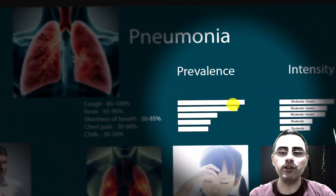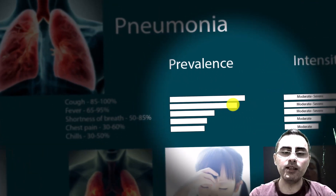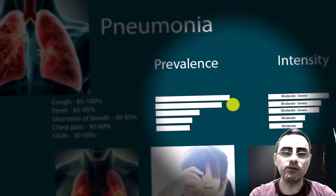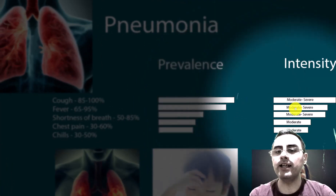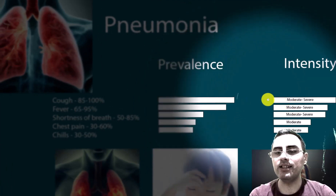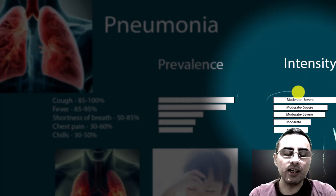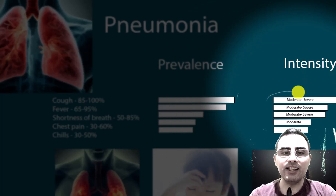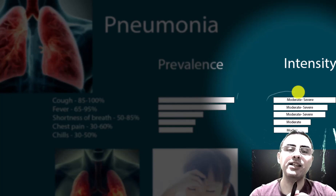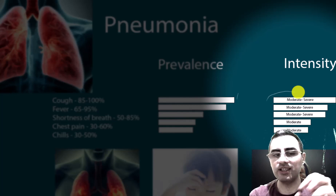Cough is also very common in pneumonia — it occurs in almost 100% of cases — but the intensity is moderate to severe. So the first difference is cough intensity: cough intensity in pneumonia is more severe.